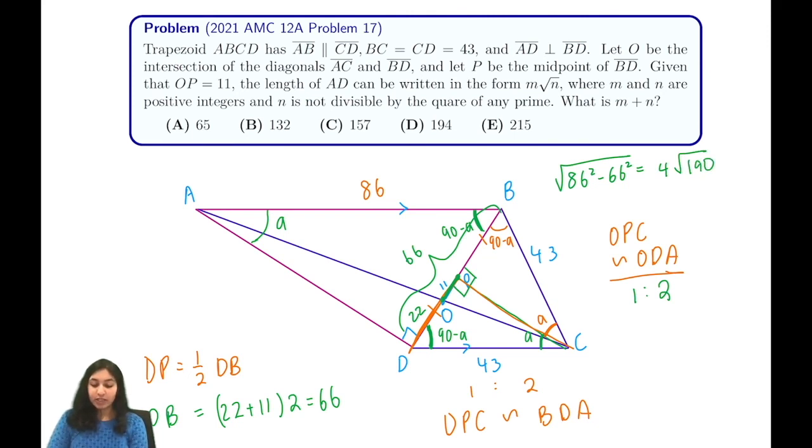And we're trying to find the sum of m plus n, where our answer is in the form of m root n. So our answer is just 4 plus 190, which is 194. And that's option choice D, which is our answer. Thanks for watching.